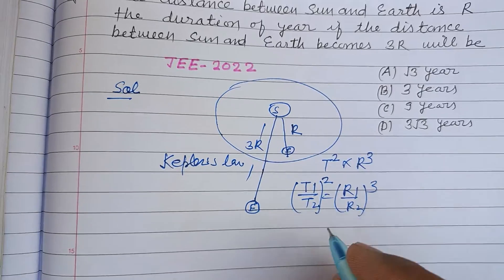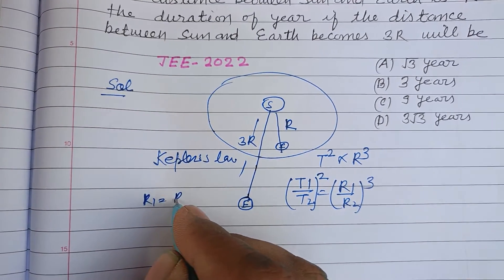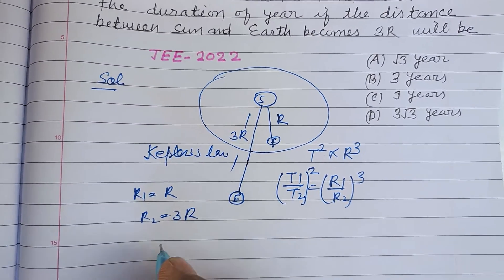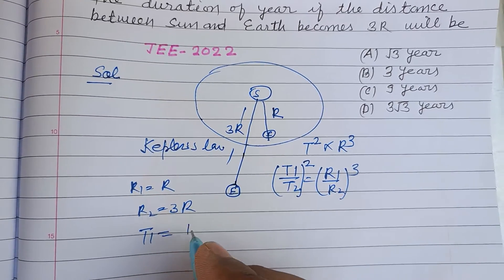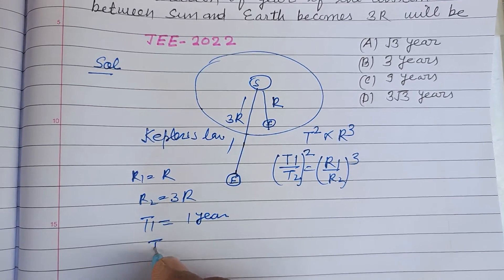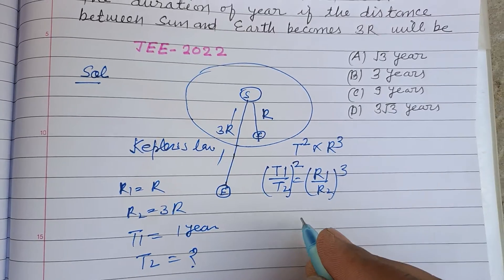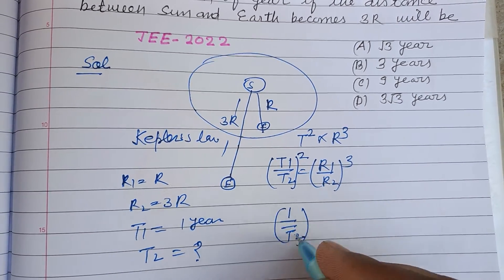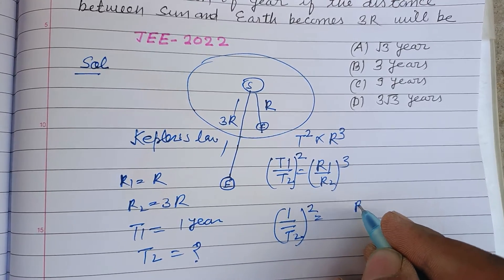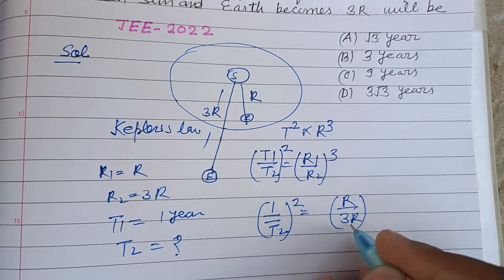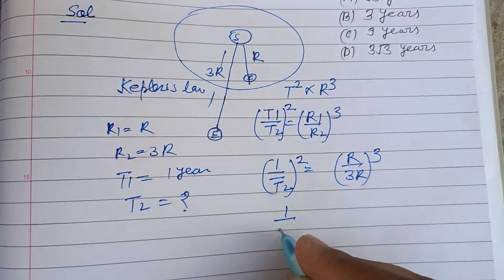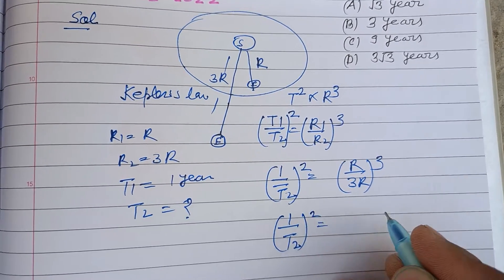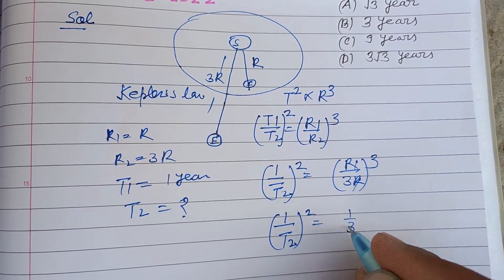Putting the values: r1 = r, r2 = 3r, and T1 = 1 year, T2 is required. So putting this in: (1/T2)² = (r/3r)³, which gives (1/T2)² = (1/3)³.